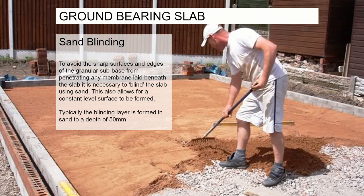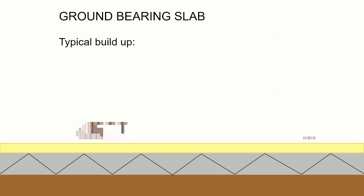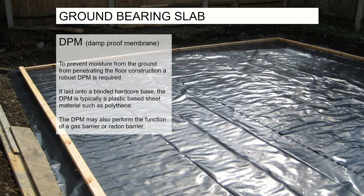Because hardcore has very sharp surfaces and we're going to lay a membrane over the top, we need to blind the surface. We lay a finer sand over the top, rake it down and compact it again. That removes all the sharp surfaces and brings any uneven levels up to create a level surface for the floor. This blinding layer is typically about 50 millimetres over the top of the hardcore sub-base, though it could be more where levelling is needed.